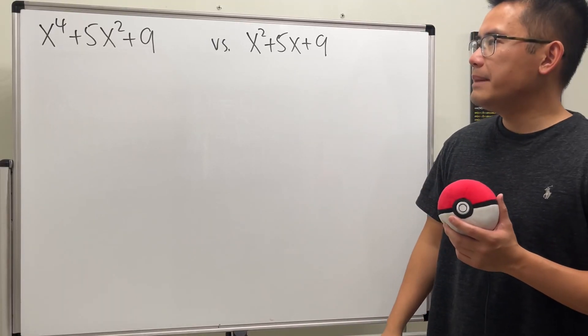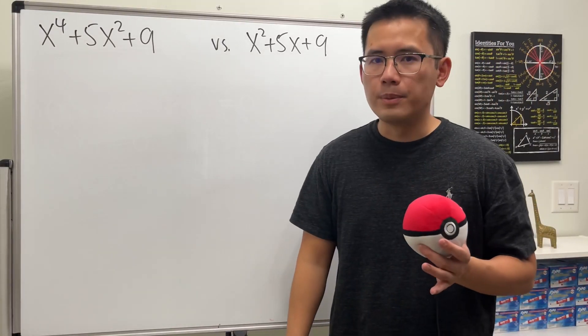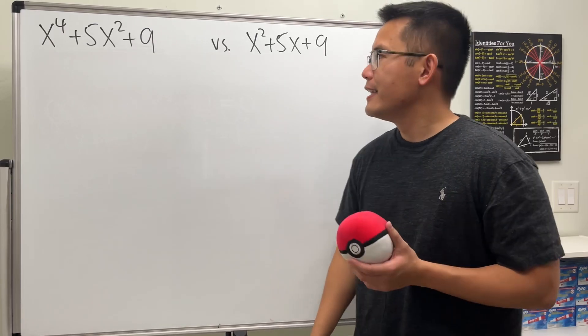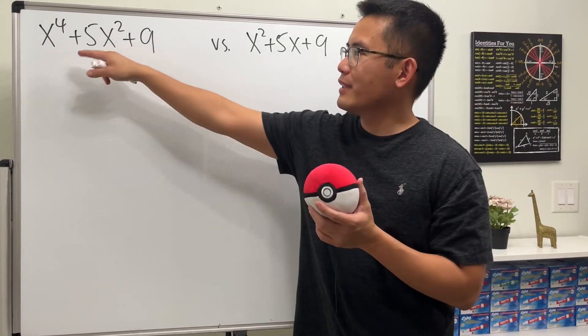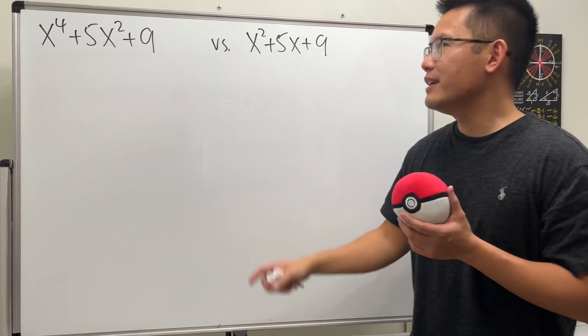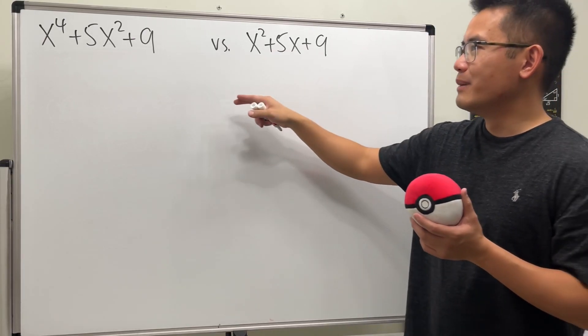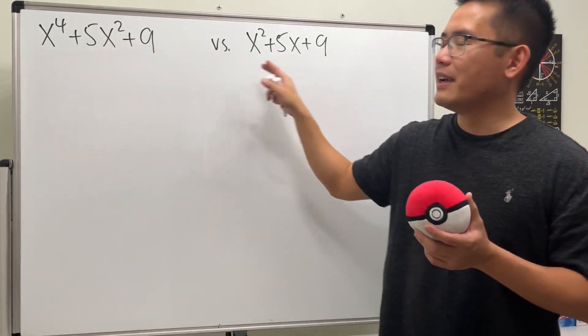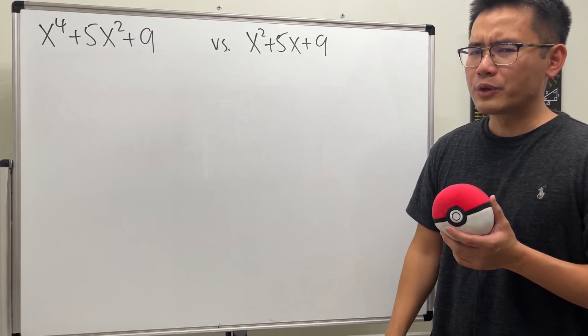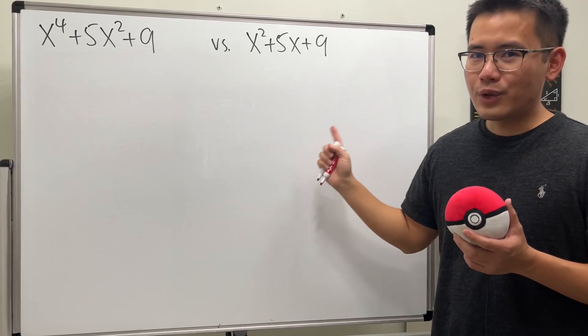We have two trinomials on the spot, and let me tell you only one of them is factorable with real numbers. The first one is x to the fourth power, which is a quartic expression, and this one is just a quadratic. Notice that the five and nine were chosen on purpose, so go ahead and pause the video and try to see which one is factorable.